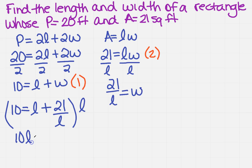If I could set this equal to zero I could factor it. So I'm going to subtract 10L from both sides and I'm going to get zero equals L squared minus 10L plus 21.